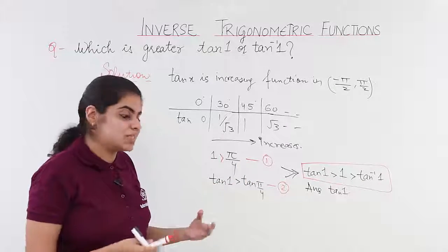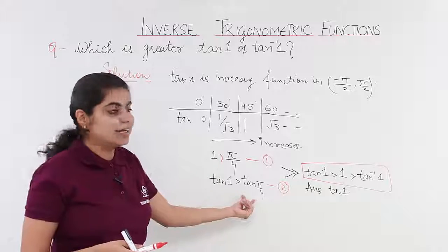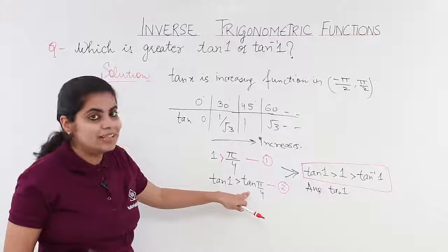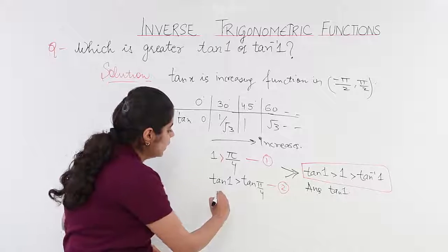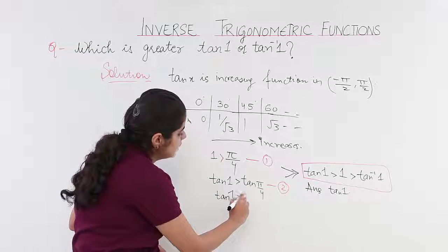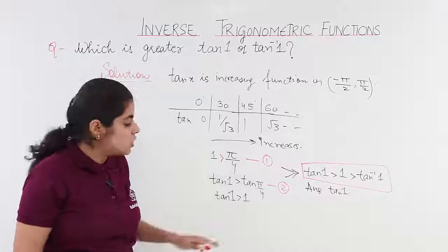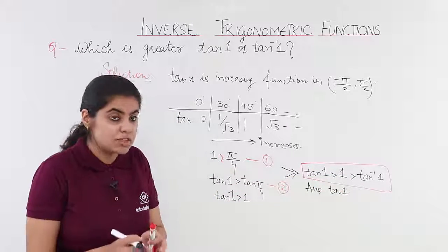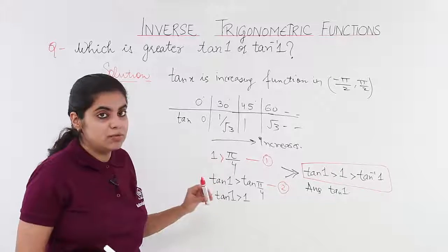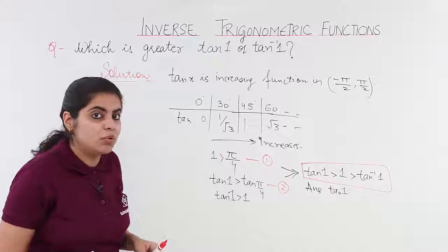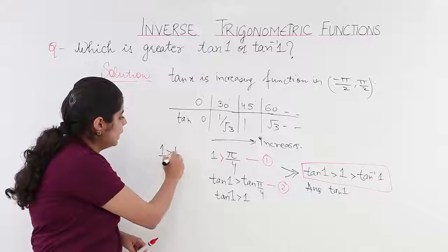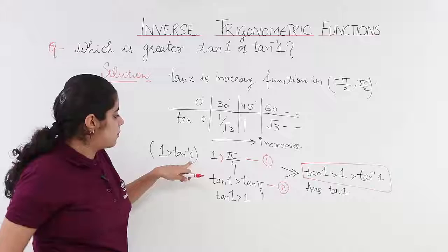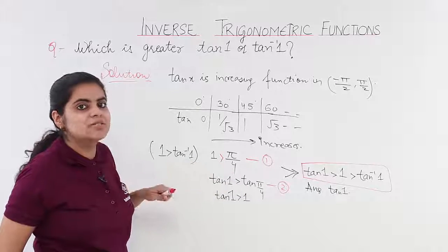What about taking tan both sides? So, it is tan 1 greater than tan pi by 4. Now, tan 1 is greater than tan pi by 4 means what? It means tan 1 is greater than 1. Right? So, tan 1 and 1 comparison has been made. What about 1 and pi by 4? 1 and pi by 4 means 1 is greater than tan inverse 1. Why? Because pi by 4 means tan inverse 1 only.